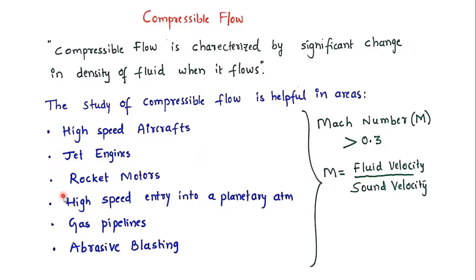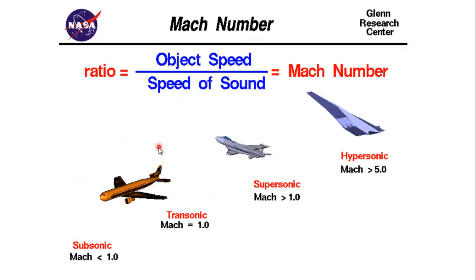These are some listed applications where we have to consider the study of compressible flow. This pictorial representation shows the significance of Mach number. Above Mach 0.3 we consider compressibility effects; at Mach equal to 1, sonic aircraft are designed; above 1, supersonic aircraft; and above 5, hypersonic aircraft. At higher Mach values, compressibility effects mean higher drag forces, which we must account for and reduce.